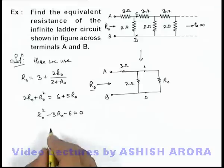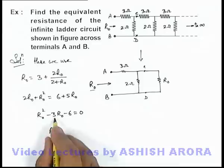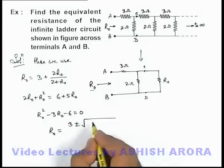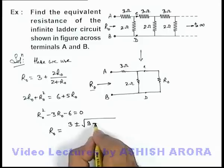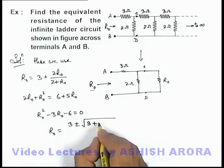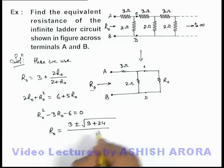So for this quadratic equation, if we find the solution, the value of R_not will be 3 plus or minus the square root of 3 squared (that will be 9) minus 4 multiplied by 6 into 1 (so this will be plus 24), divided by 2.